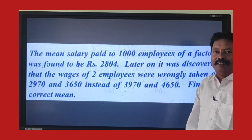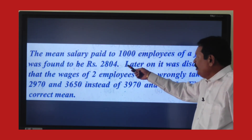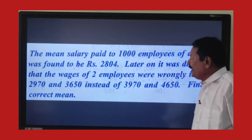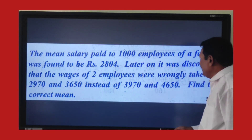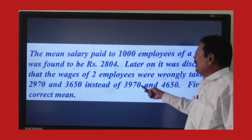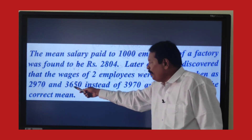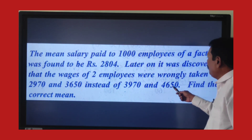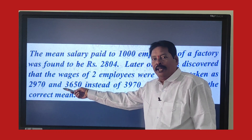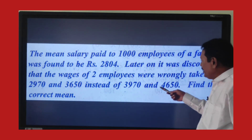There are 1,000 laborers in a factory and their arithmetic mean is 2,804. After finding this arithmetic mean, it was discovered that the wages of two employees were wrongly taken. One laborer's wage was wrongly taken as 2,970 instead of 3,970, and another employee's wrong figure was 3,650. These are the wrong figures included in the total wages of the 1,000 laborers.